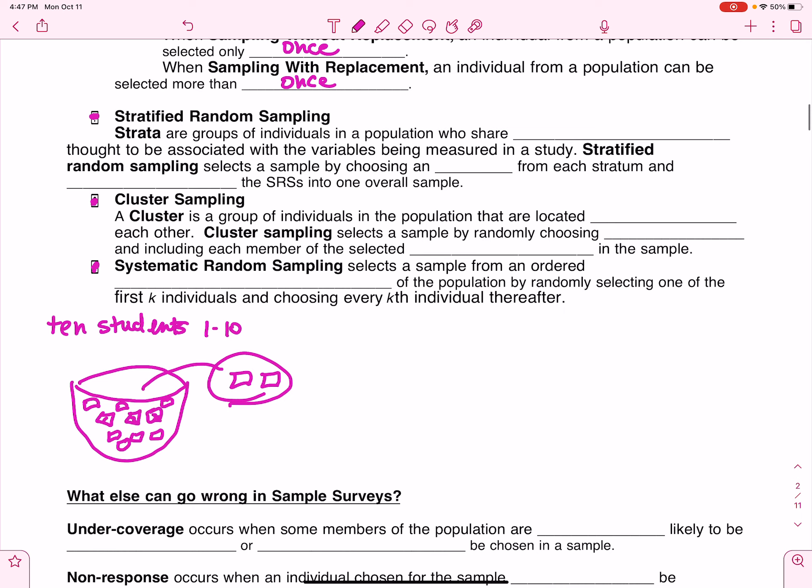Okay, so the next way that we sample randomly is through a stratified random sample. Now, I'm going to do this when I think that some characteristic in the population might affect the outcome. So if I think people are going to answer my survey differently based on their age level or fitness level or ethnicity or something like that, then I'm going to want to stratify them.